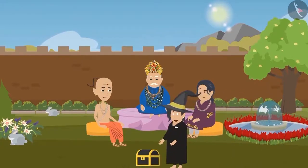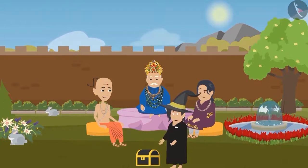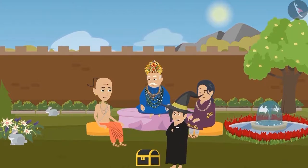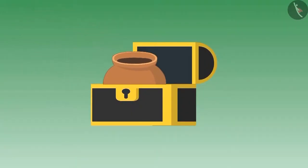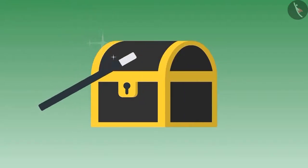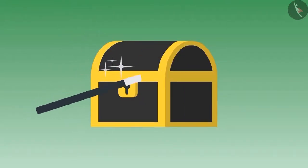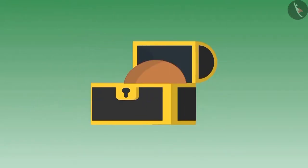The magician said that if the king keeps anything inside the box, it will rotate upside down. The king gestured to Tenali Raman first. Tenali Raman placed a pot inside the box. The magician recited the magical words and opened the box — the pot had turned upside down.